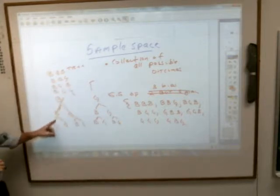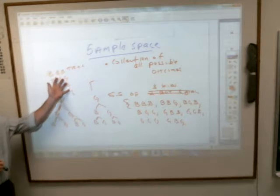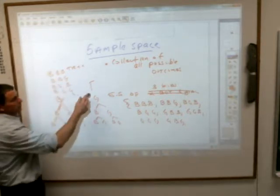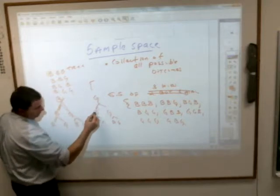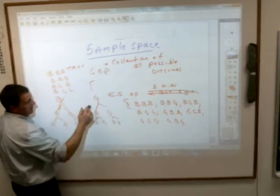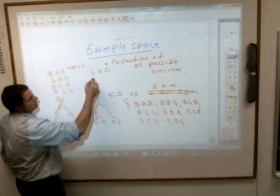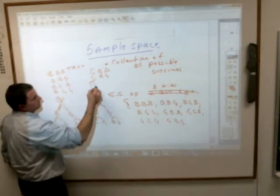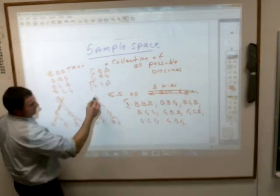Okay, those are the one, two, three, four different combinations you could get if you had a boy first. If you had a girl first, you could have girl, boy, boy. You could have a girl, boy, girl. You could have a girl, girl, boy. Or you could have a girl, girl, girl.